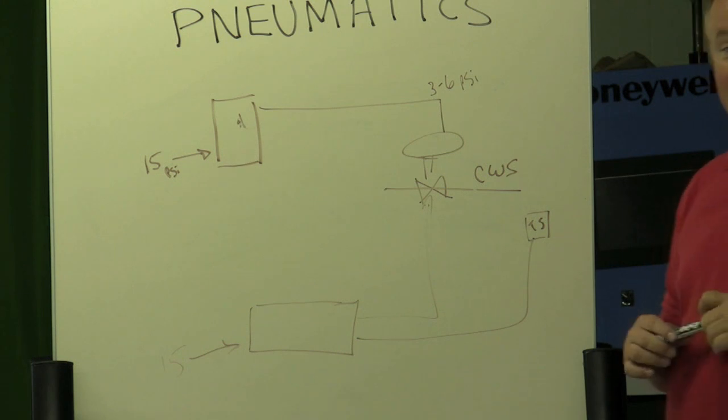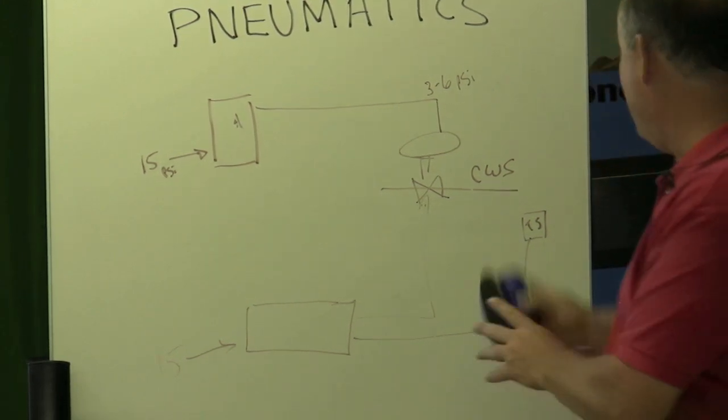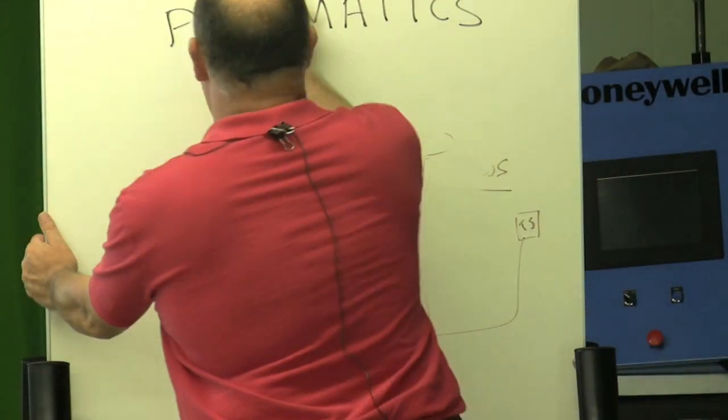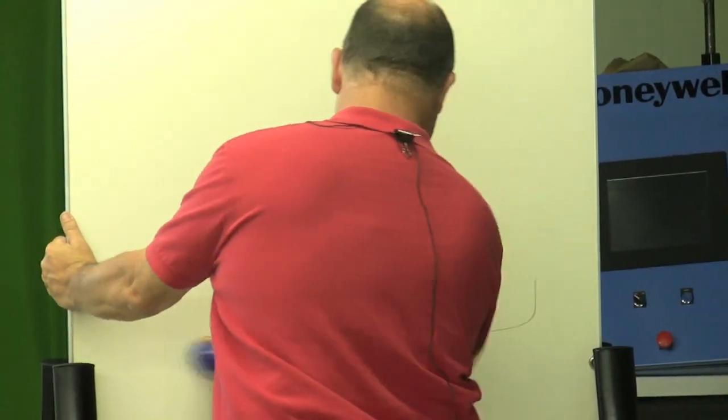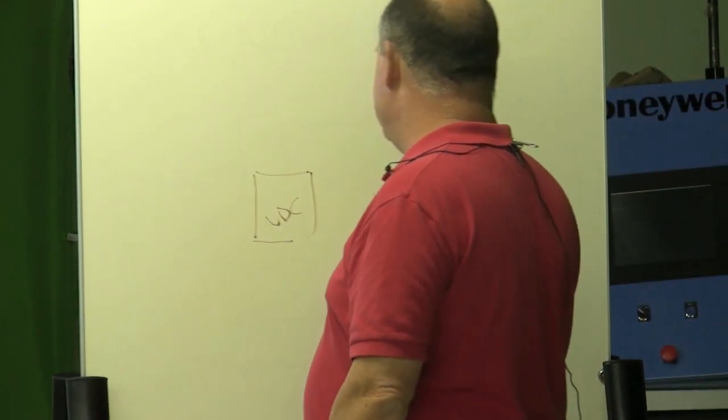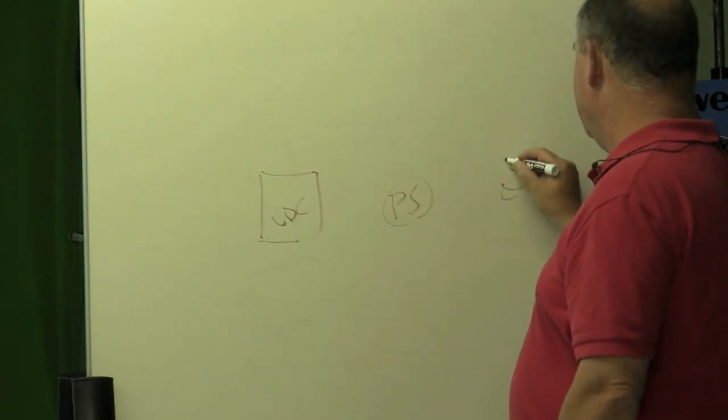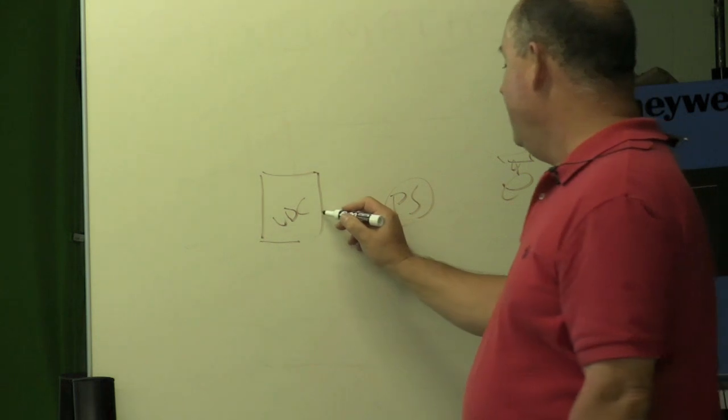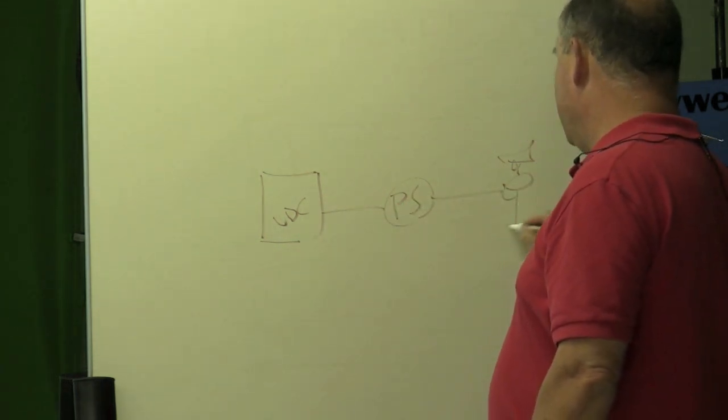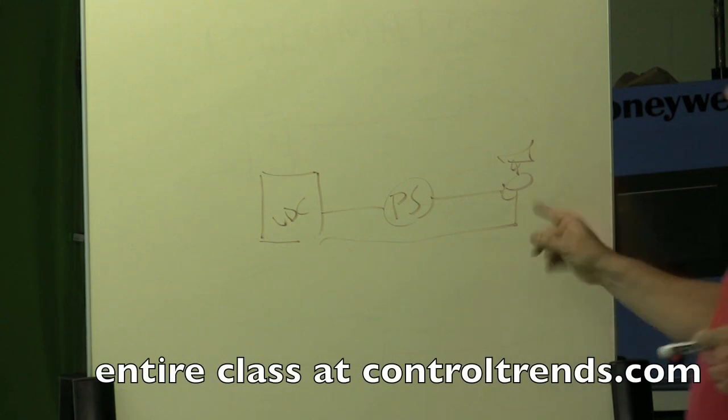They have to be powered. They'll give you 4 to 20, but only if you power them. A couple ways to do that. You asked about the UDC giving its own power. Many times you'll do a UDC, a power supply, and then your little transmitter, and you just wire these guys in a loop. It's always going to be a loop, and it's got to be powered. So that's one way to do it.